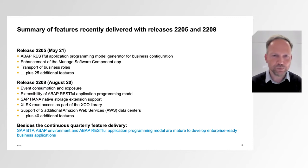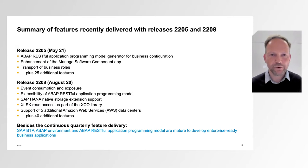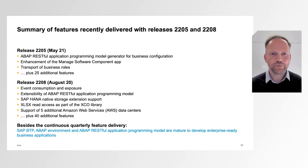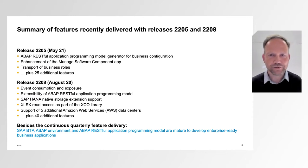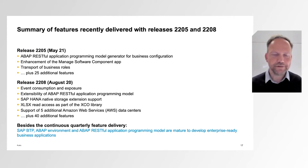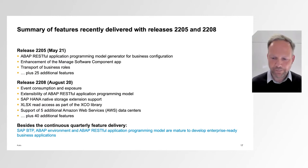The HANA native storage extension enables customers and partners to persist their custom data in a cheaper part of HANA. We are now also able to support the upload and evaluation of Excel files. Additionally, we are now supporting five additional data centers on AWS, which increases our regional coverage of Steampunk. Besides this continuous quarterly feature delivery — normally 25 to 50 additional features — we can say that Steampunk together with RAP is now mature to develop enterprise-ready business applications.